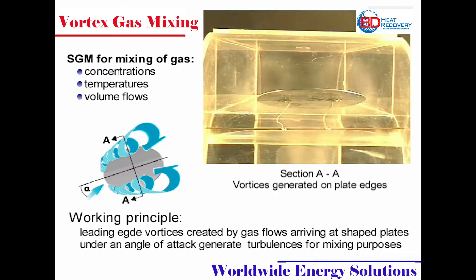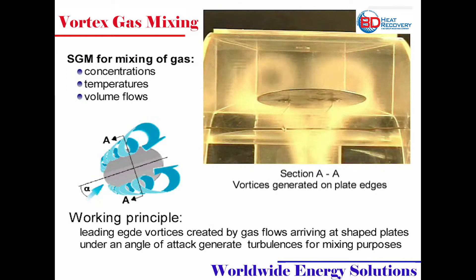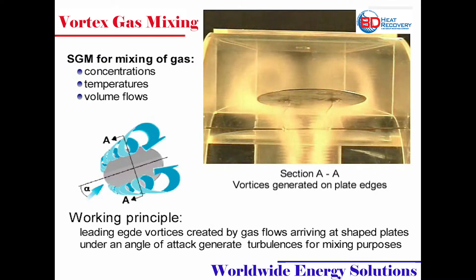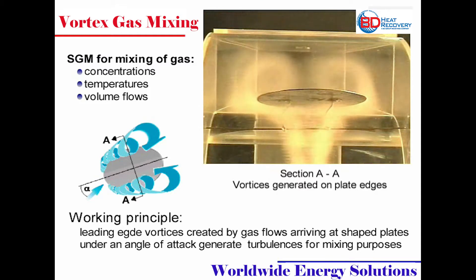It is known from aeronautic applications that plates inclined to an oncoming flow can produce vortex from the leading edge, which travel backwards and extend behind the plates. An example of this would be a swept wing aircraft. These vortex normally are double and have a conical shape. They rotate in opposite directions and their diameter gradually increases after leaving the plate.